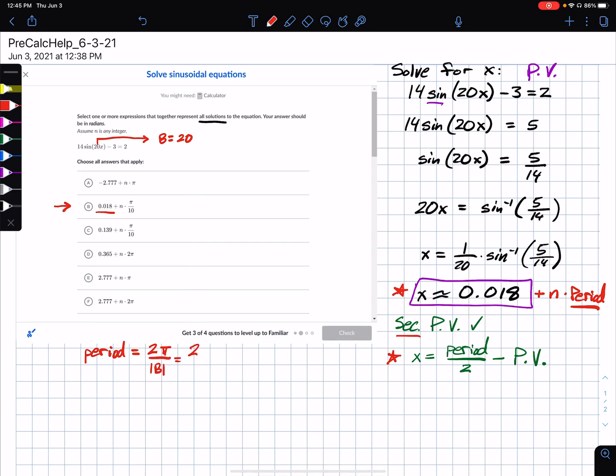So 2π over 20 will be π tenths. That is our period in exact form there. So that really does solidify my answer choice for b, because it's got the principal value plus the skip counter, which is based on the period of this specific function.